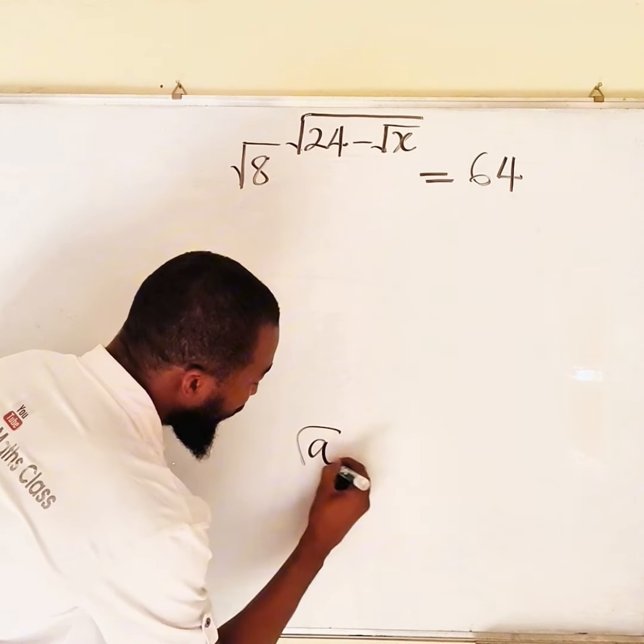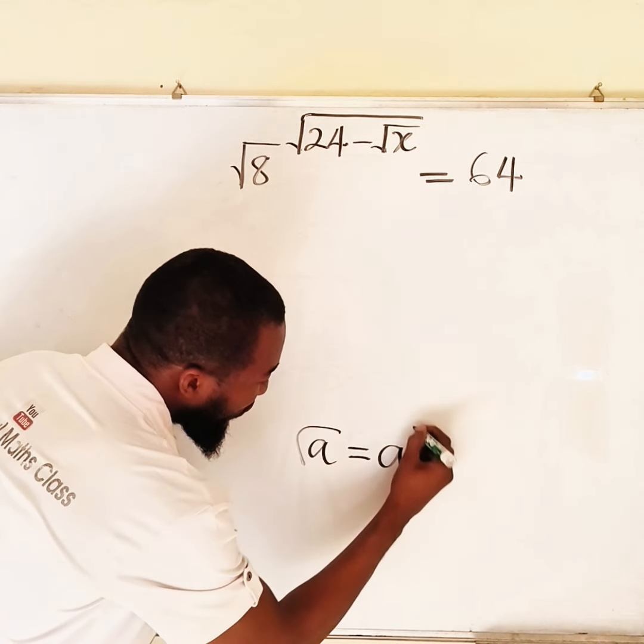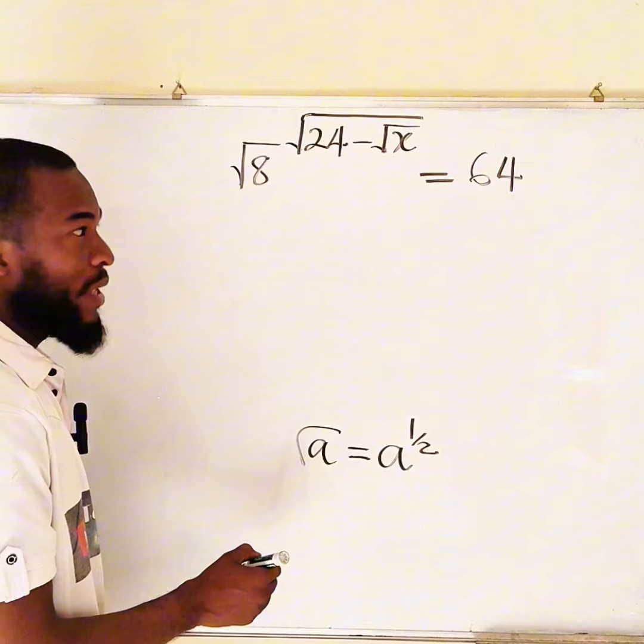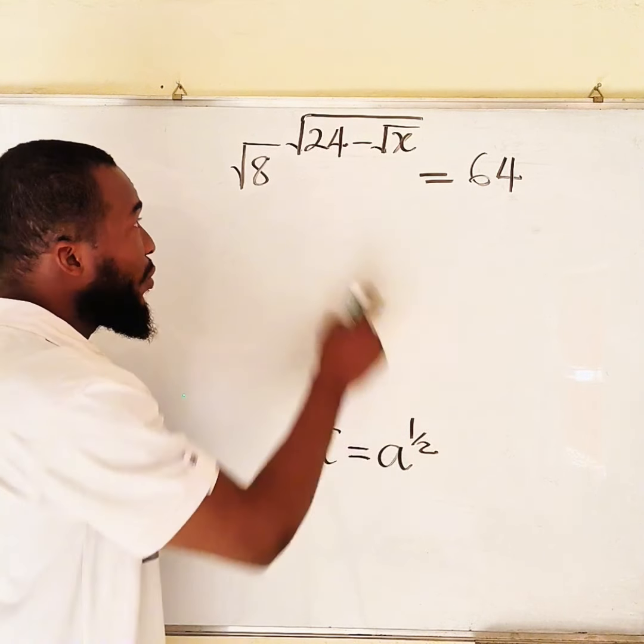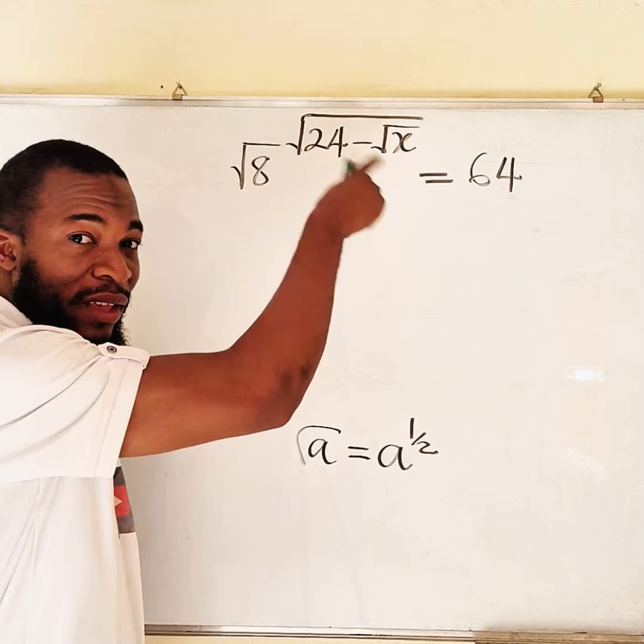Remember, if you have square root of 8, for example, it is 8 raised to the power of 1 over 2. And since we have an existing exponent, this new exponent will multiply the already existing exponent.